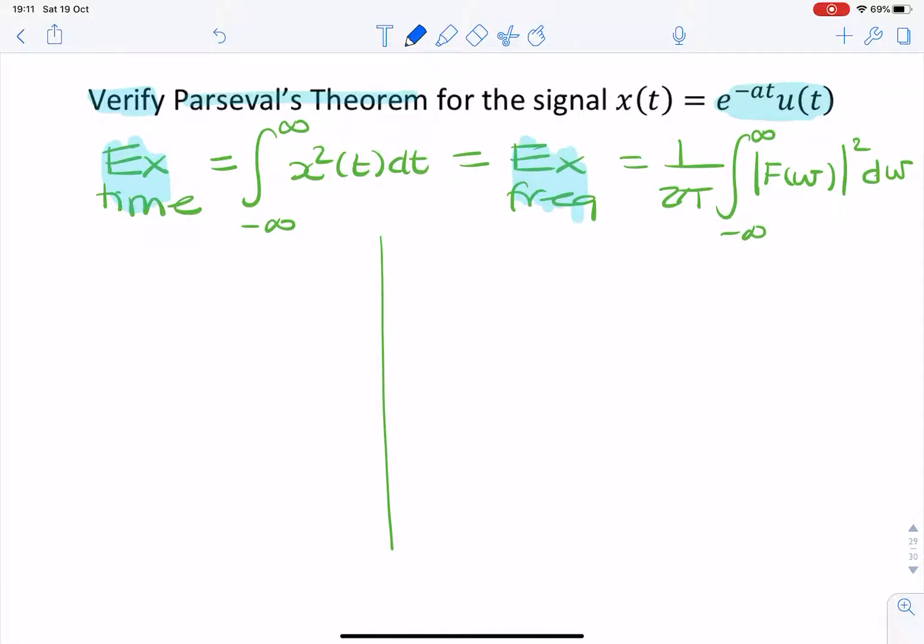So the energy in the time domain is the integral minus infinity to infinity, e to the minus at squared dt.